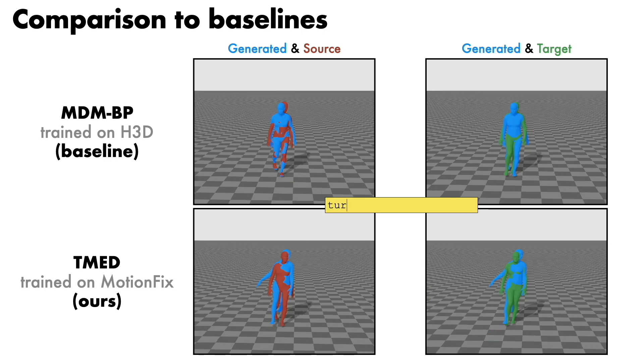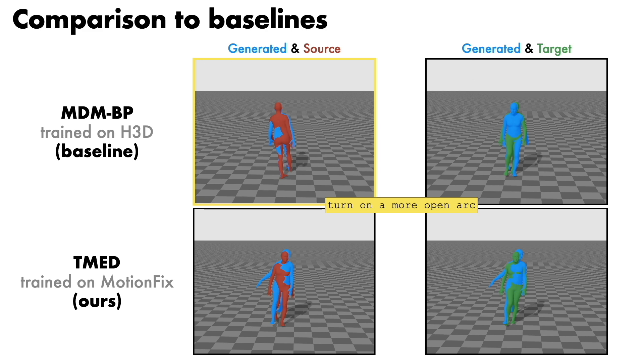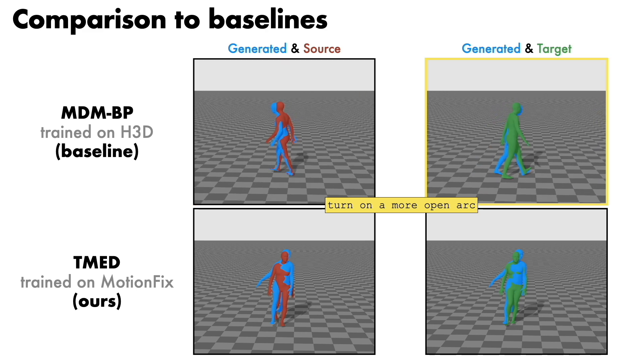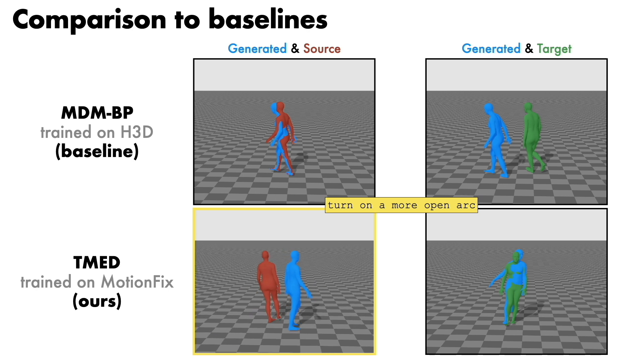Finally, for the edit text turn on a more open arc, MDM-BP generates turning but does not change much from the source motion, while TMED generates a turning motion obviously wider than the one in the source motion.